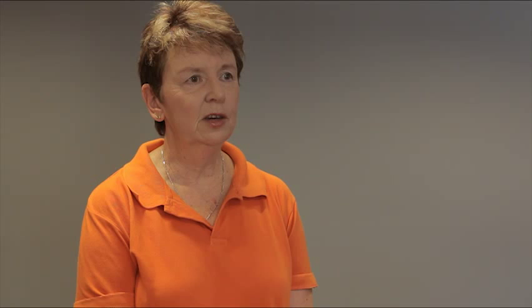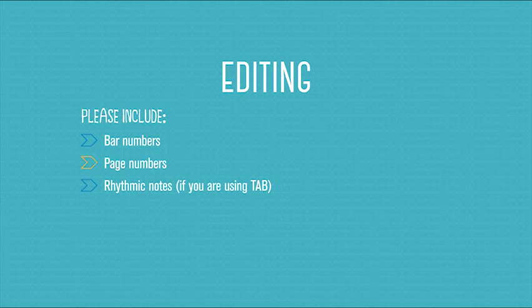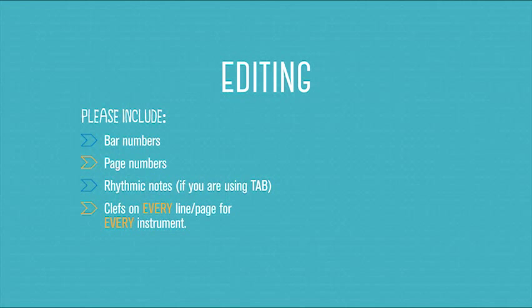The biggest problem examiners face with marking composition is the editing process. Please include bar numbers, page numbers, and rhythmic notes, particularly if you're using tablature. Clefs need to go on every line and every page for every single instrument, even your percussion. Include a legend indicating instruments and special instructions at the very beginning.